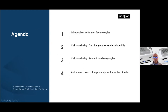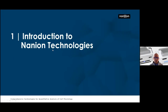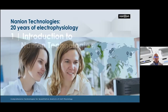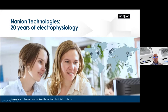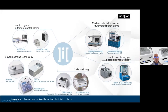So I split the presentation into four little sections. Let me just very quickly tell you a little bit about Nanion Technologies, who we are. The company was formed about 20 years ago. We're headquartered in Munich. And this slide shows that we have a very diverse array of products, ranging from automated patch clamp instruments shown here.